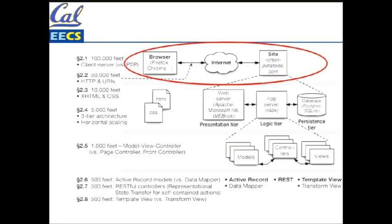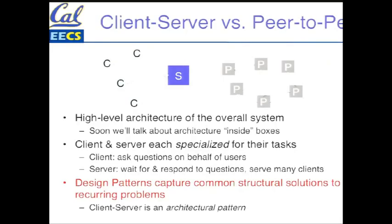We'll talk about what the other architectures are and how the web came not to be about those. The most common other architecture in distributed systems is peer-to-peer. In a client-server architecture, you've got typically a single logical server serving a large number of clients. The client asks a question, the server provides the answer. Over time, client and server software get specialized: the client interacts with the human and asks questions; the server waits for questions and serves many clients efficiently.